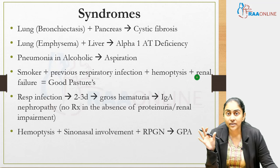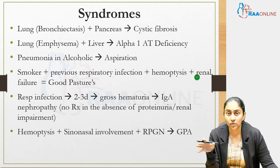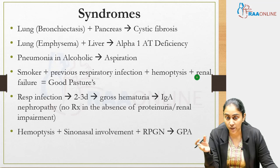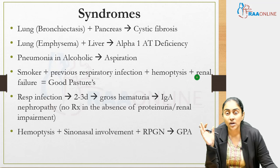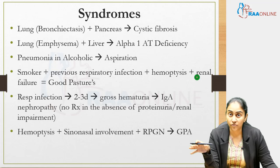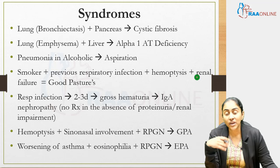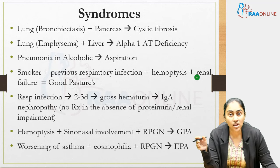When there is hemoptysis with sinonasal involvement — such as nasal bridge collapse or frequent sinonasal infections — plus rapidly progressive glomerulonephritis, this is GPA (granulomatosis with polyangiitis); C-ANCA is usually positive. When worsening asthma with eosinophilia and glomerulonephritis is described, this is EGPA (eosinophilic granulomatosis with polyangiitis), associated with P-ANCA.